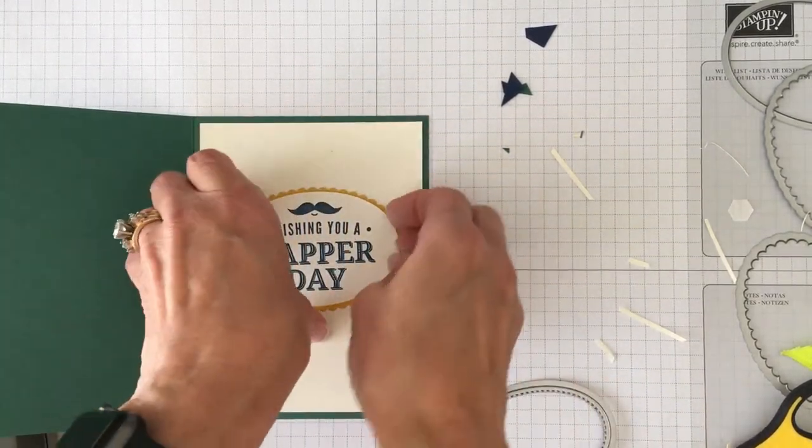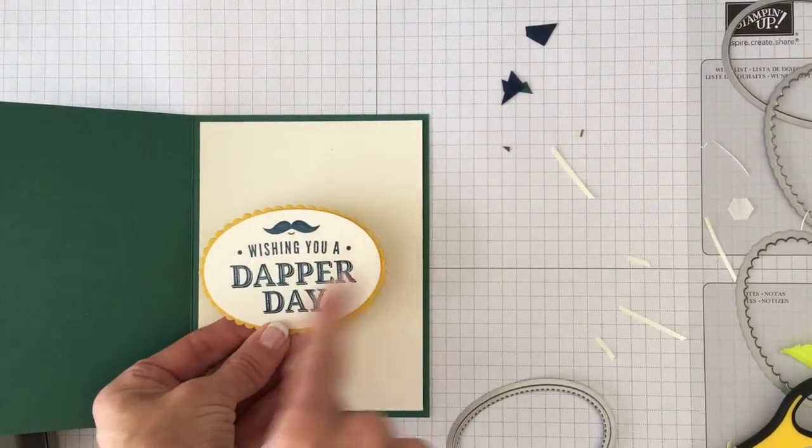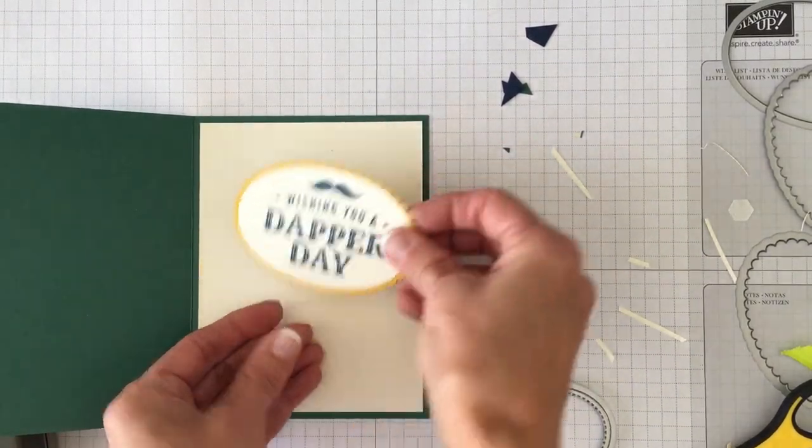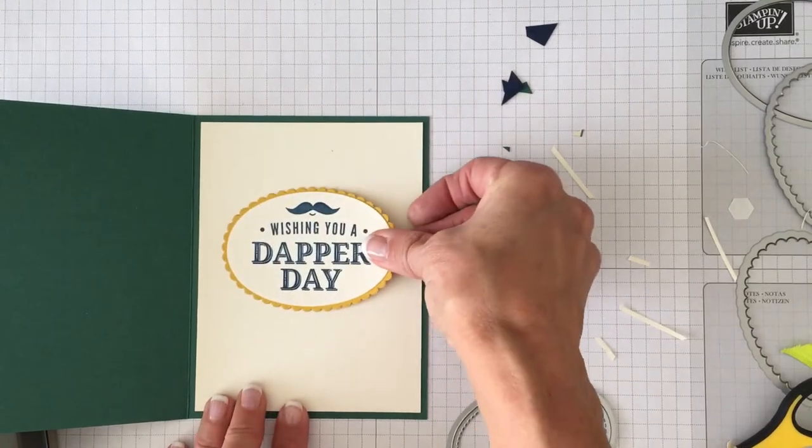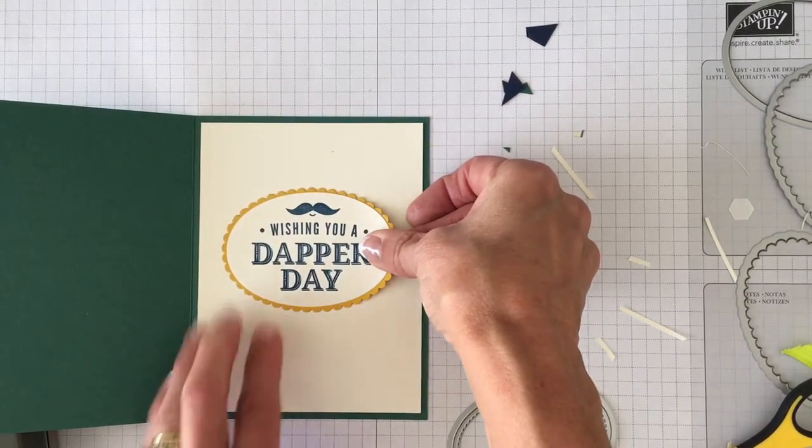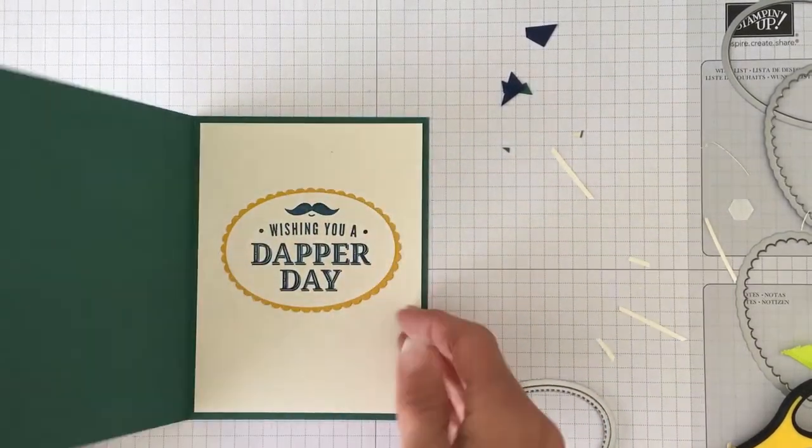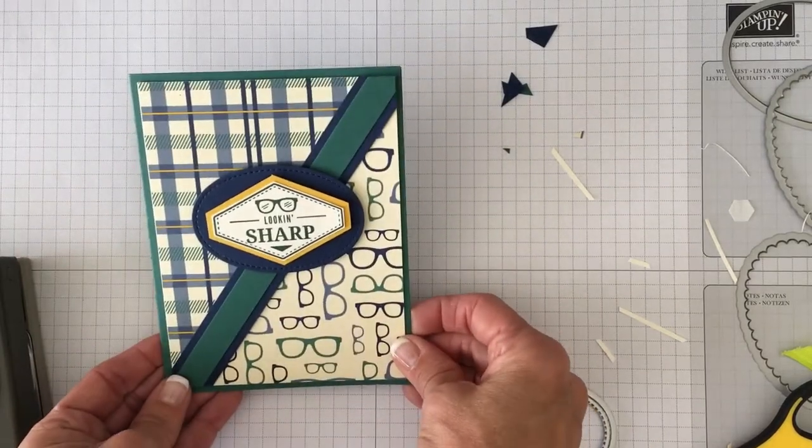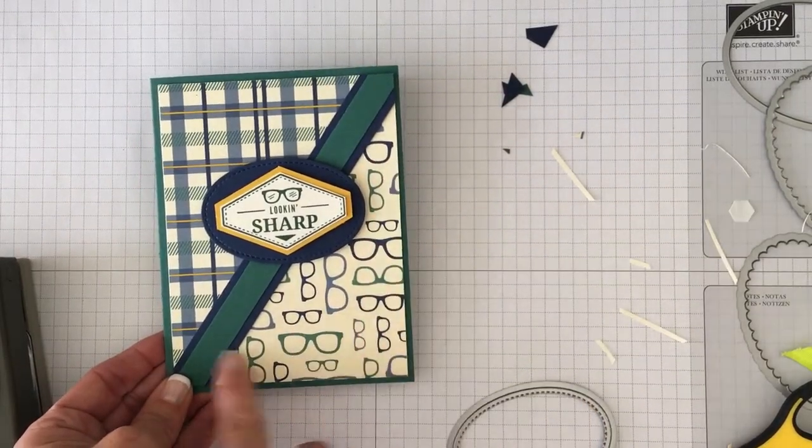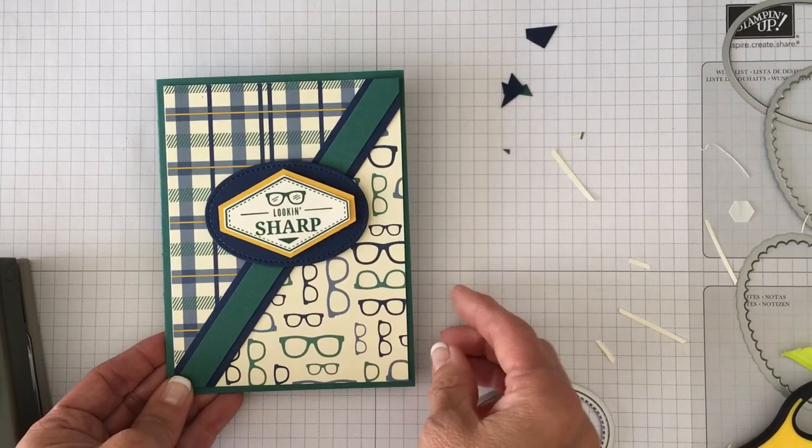And it's so much easier to just stamp this and cut it out and try to get it straight sometimes. So what I did is I just put that on the inside of the card. So that's a real simple card using up the scraps of triangles if you've made the crisscross pocket card.